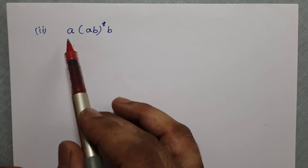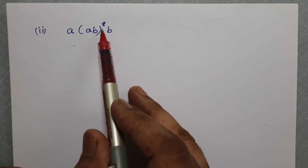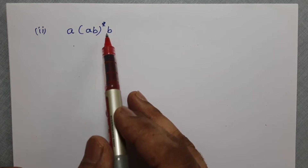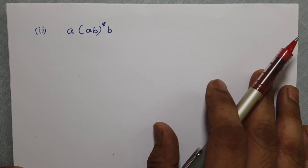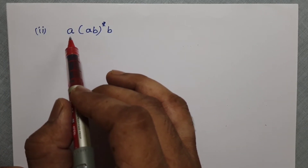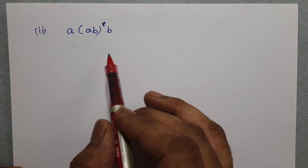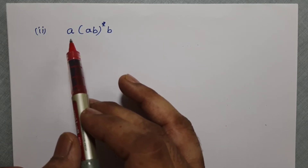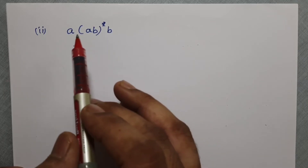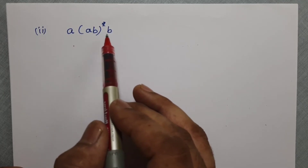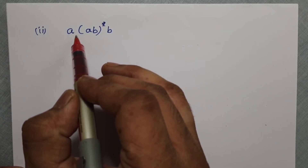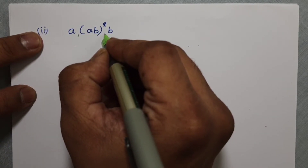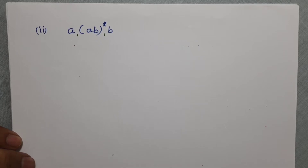This is example number two: A(AB)*B. Let us see how we can draw this. To make it easier, let us focus on drawing a non-deterministic automata first, since we know the conversion from NFA to DFA. We can divide this expression into three parts — there are three concatenations available, one at each junction point, and we will use these to draw the automata.